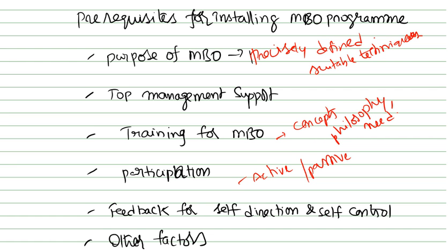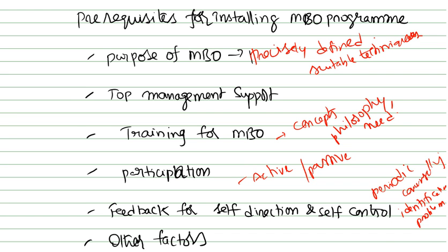The next prerequisite is feedback for self-direction and self-control. Whenever you introduce a program, feedback tells you in which cases you are doing well and in which cases you are not meeting requirements. Feedback is necessary in the form of periodic counseling and appraisal — continuous counseling is required. Identification of the problem is done through feedback.